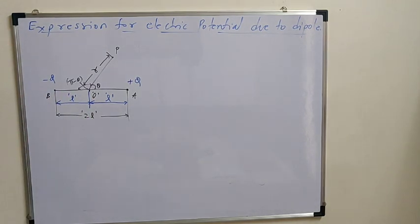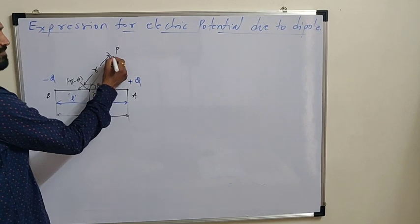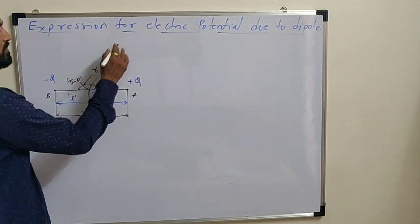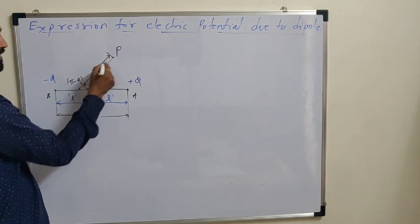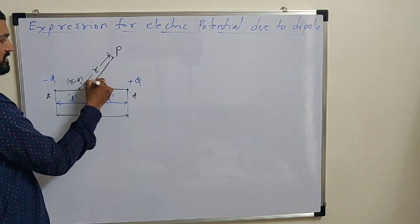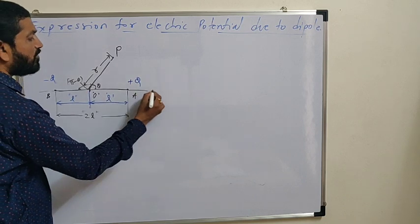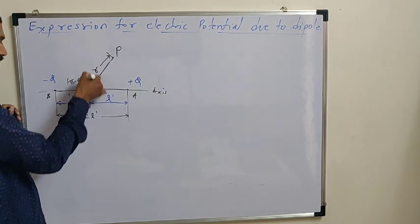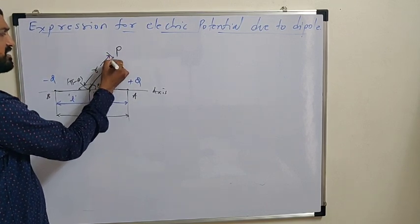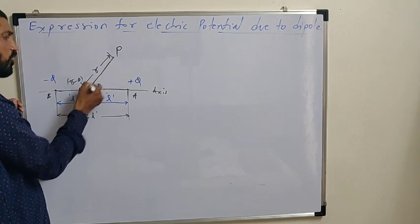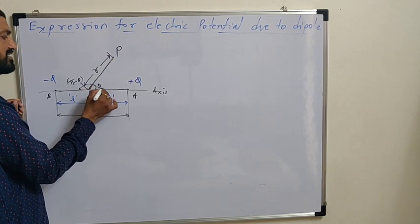Now, our requirement is to find electric potential at a point near to dipole. I have diagrammed here. This is point P. This is a distance from the center of dipole. And this point is considered on a line which makes angle theta with the axis. A straight line passing through center is called as its axis. A line perpendicular to axis passing through center is called as equator. This is a point anywhere near to dipole on a line OP whose distance from the center of dipole is R and angle made by this line with the axis is theta.